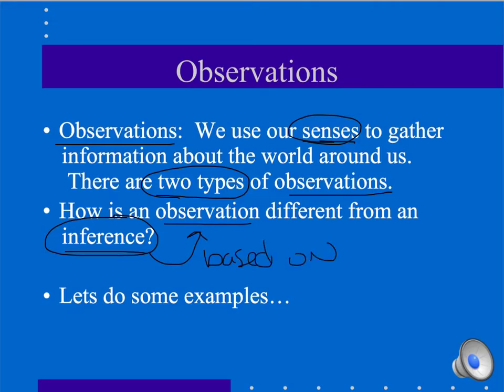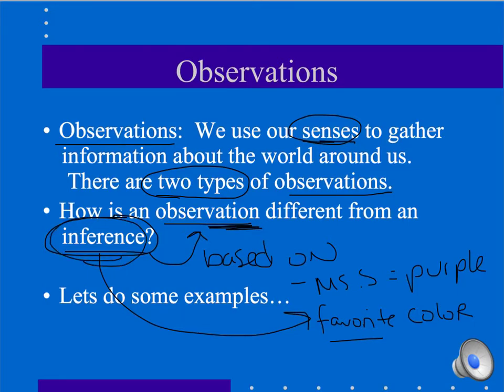An inference is typically based on an observation. For example, perhaps Miss Schultes wears purple all the time. I observe that she wears purple, but my inference would be that her favorite color is purple. I can't directly say that I know Miss Schultes' favorite color is purple. I'm just basing an inference from the observations that I've made.